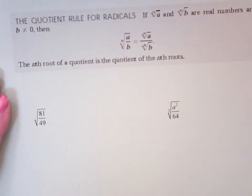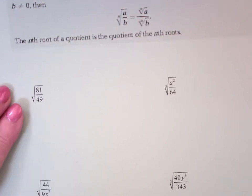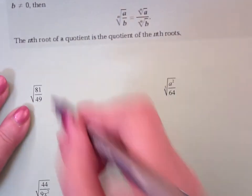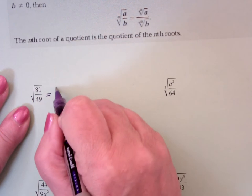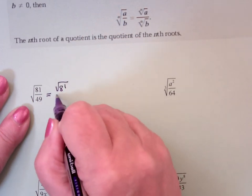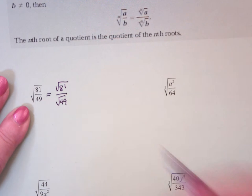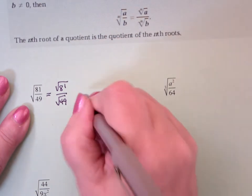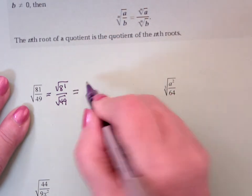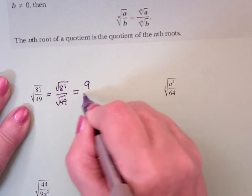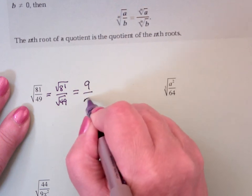We've already done something like this earlier whenever we were simplifying radicals. This says this is the square root of 81 over the square root of 49, because one radical can be written as two. The square root of 81 is 9 and the square root of 49 is 7.